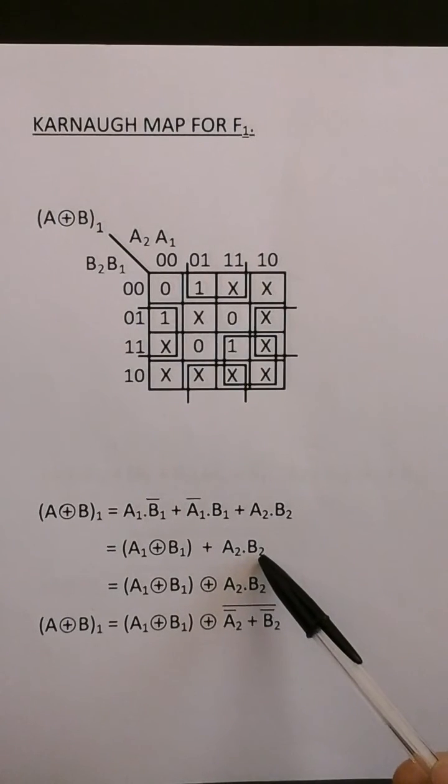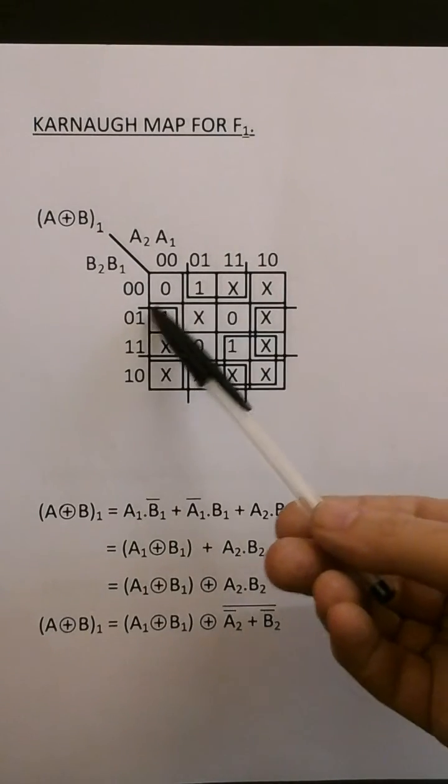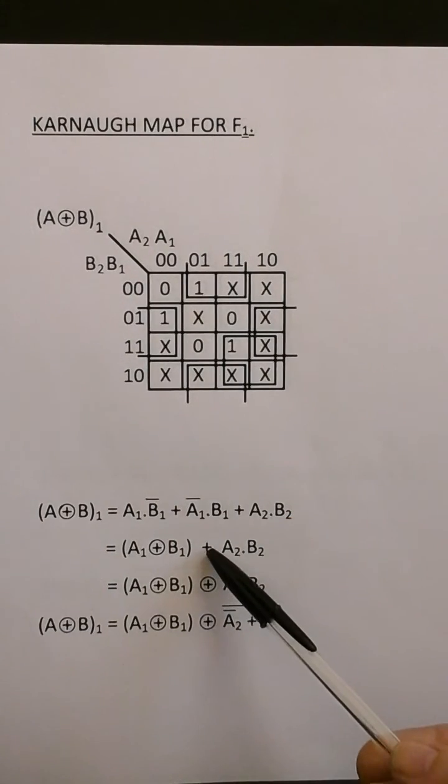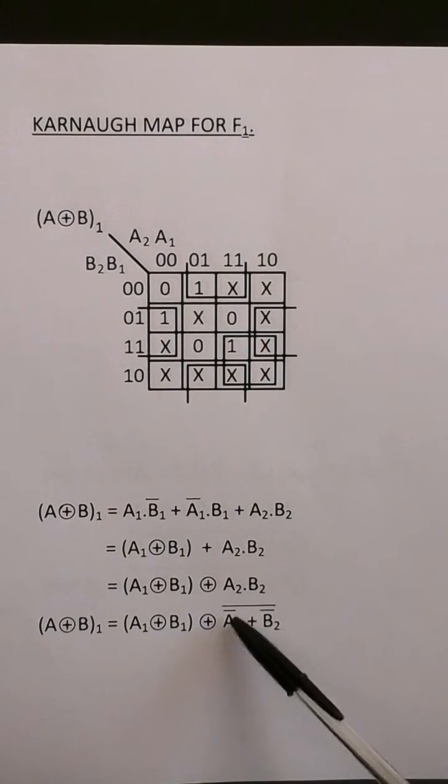Bring the A2 and B2 down there. And because I'm only looping ones with one loop, I can change this or to an exclusive or. And here, I've used De Morgan's theorem to change the and to a nor.